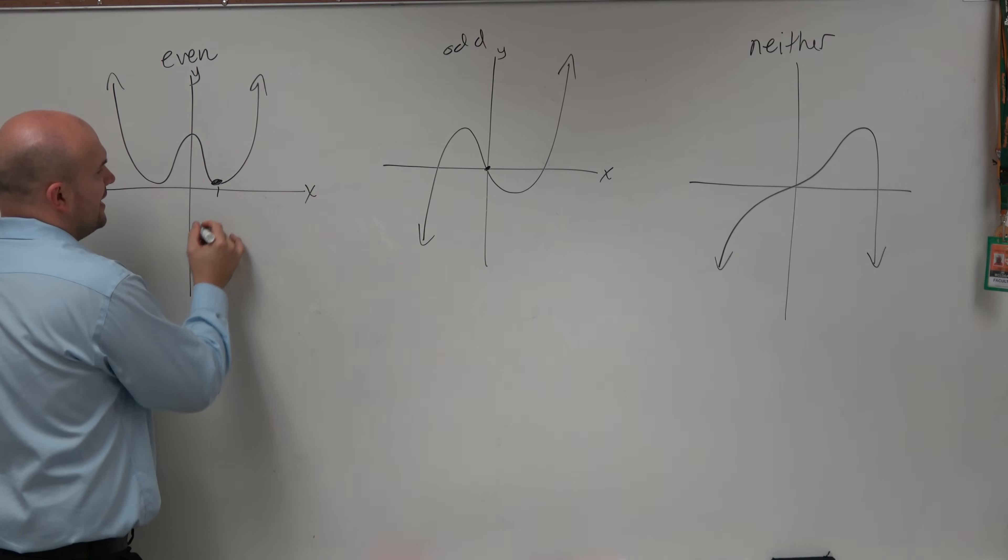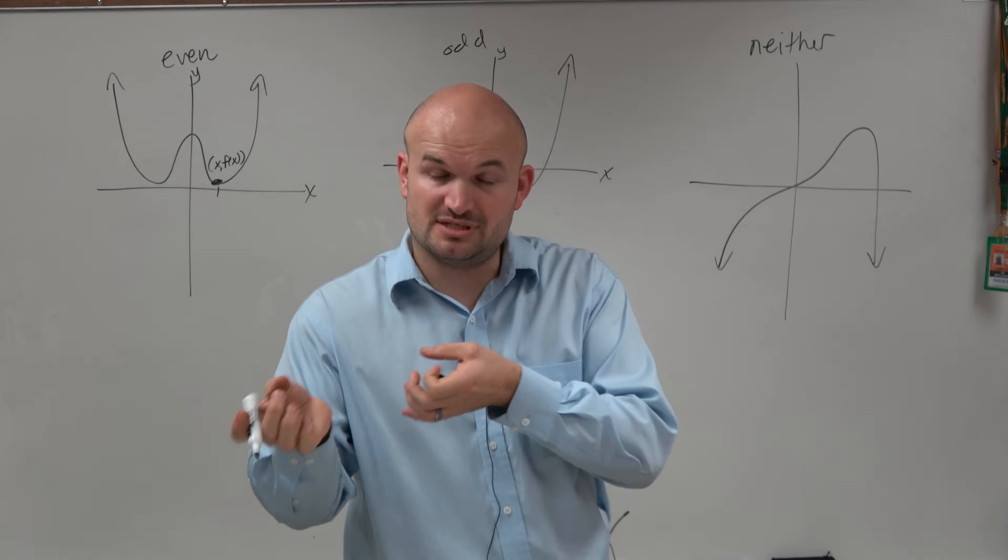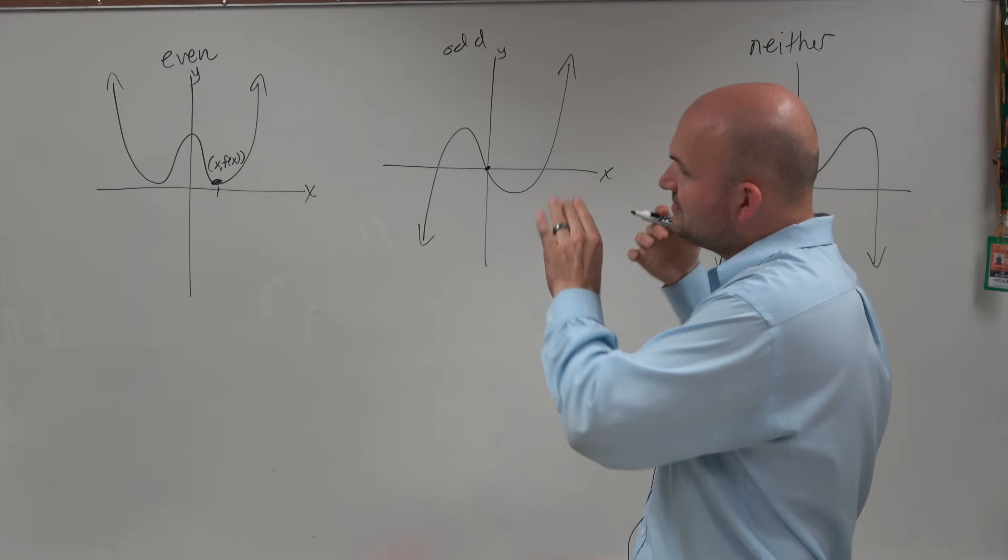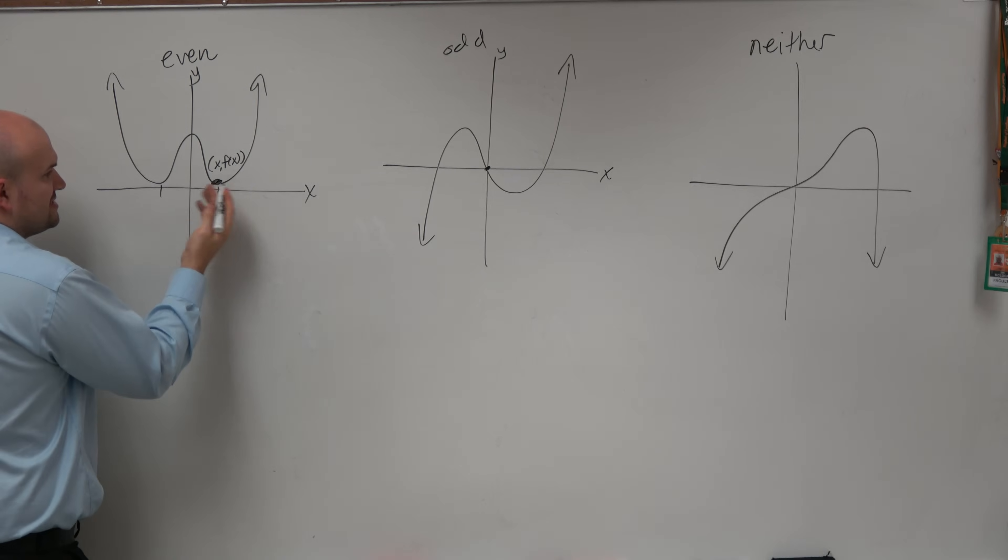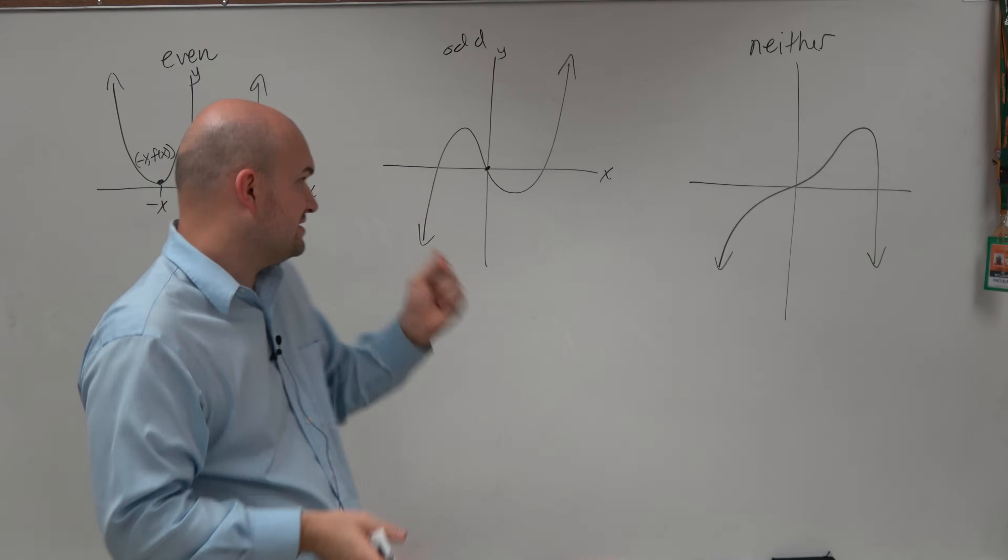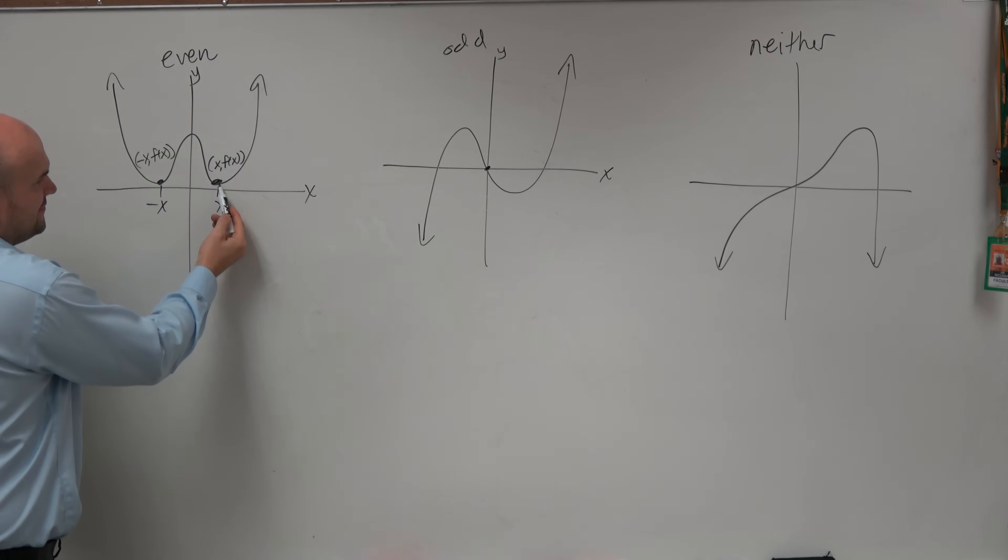So let's pick some random points here. And this random point is going to have the coordinates x comma f of x. X is the input, f of x is the output, just like x and y coordinates. Now if I was going to take this point, let's say this is x, let's reflect this point. Therefore that's going to be negative x. So what happens is when I have negative x, I'm still going to get f of x back out. And that's really the essential of the even function. Since they're symmetrical about the y-axis, if you have x over here and negative x here, their heights are always going to be exactly the same.